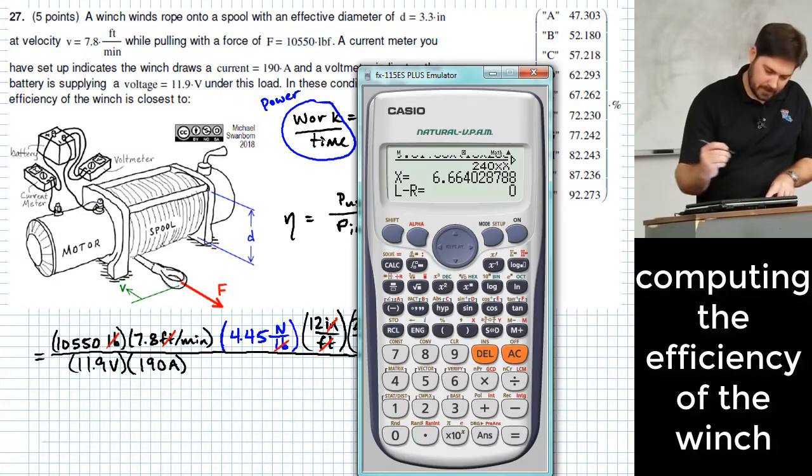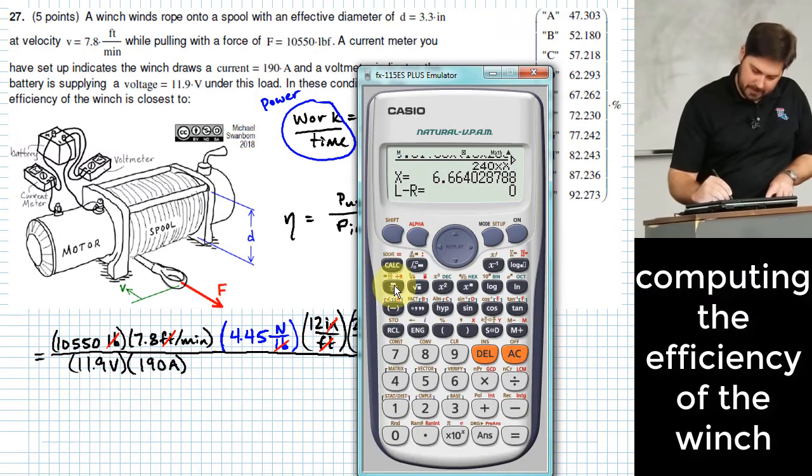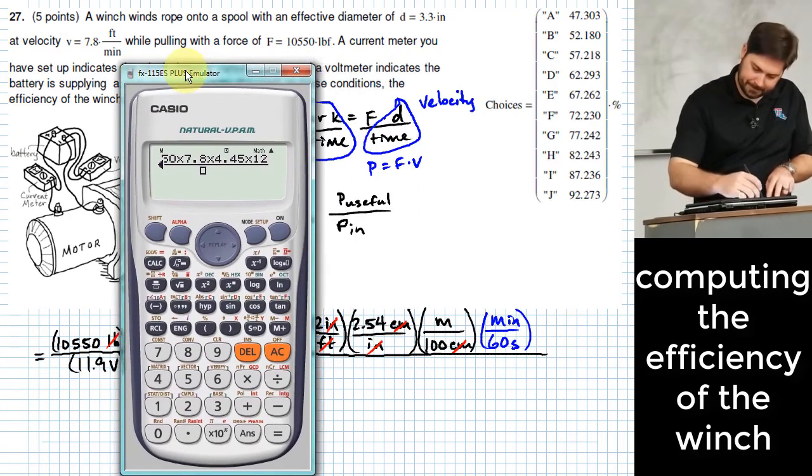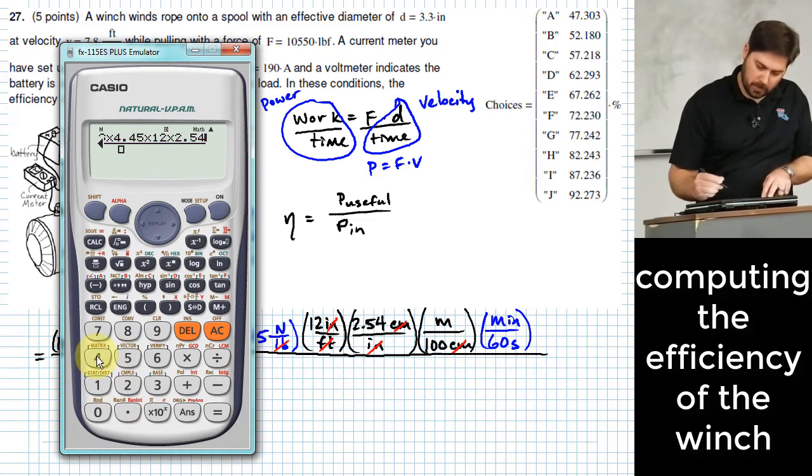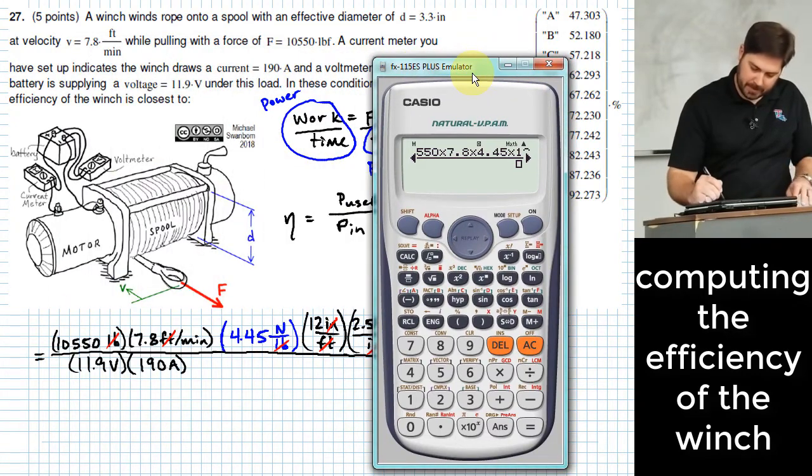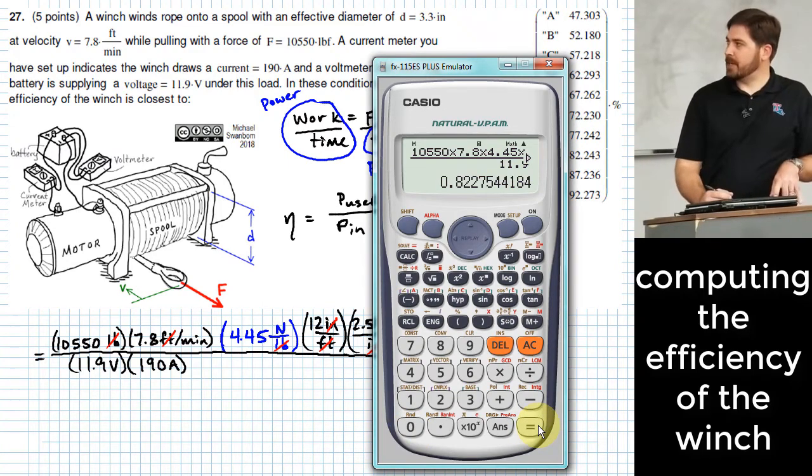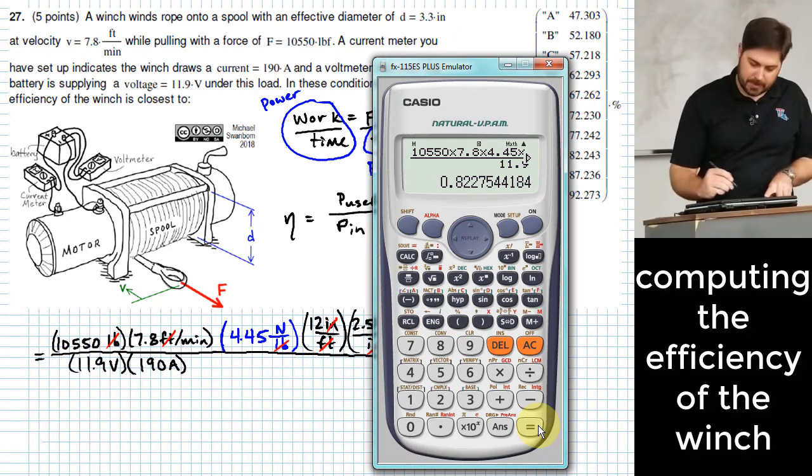So it's kind of a big mess, but we'll go ahead and do it. So I'm going to put 10,550 times 7.8 times 4.45 times 12 times 2.54, right? Divided by 100 times 60. And in the denominator, I'll put 11.9 times 190. So I end up at 82.3% efficient or so.